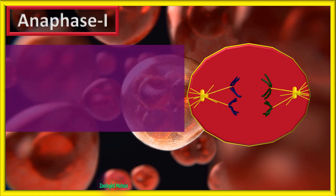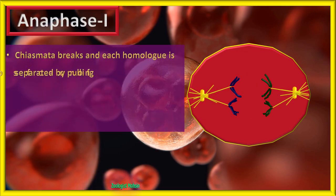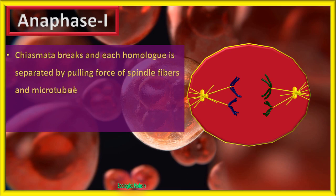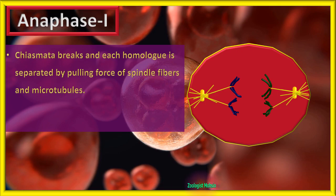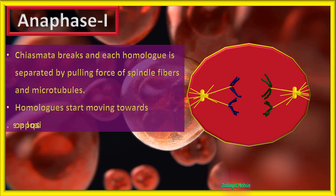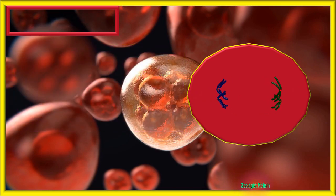Anaphase 1: chiasmata break and each homologue is separated by the pulling force of spindle fibers and microtubules. Spindle fibers directly attach to the kinetochore while microtubules originate from spindle fibers and attach to the rest of the chromatid. Homologues start moving towards opposite poles.